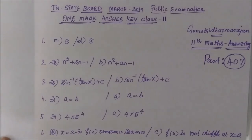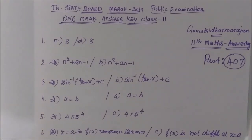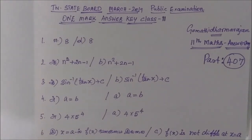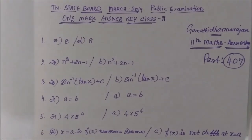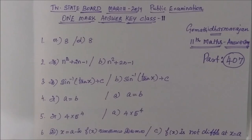We will see question number 1: option D, 8. Then for question number 2: option B, n squared plus 2n minus 1. Question number 3: option B, sin inverse tan x plus c.